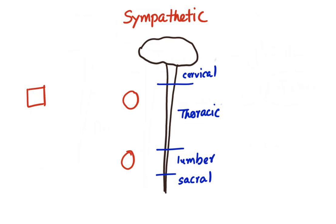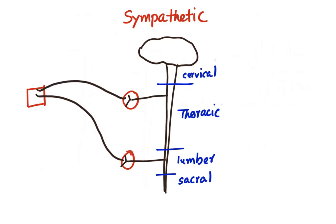In the sympathetic nervous system, the pre-ganglionic neurons arise from the thoracic and lumbar segments of the spinal cord, so it is called thoracolumbar outflow. Most of the ganglia are located close to the spinal cord in the paravertebral ganglia or sympathetic chain. Since the ganglia are located close to the spinal cord, the pre-ganglionic fibers are short, whereas the post-ganglionic fibers are very long and innervate the effector organs.